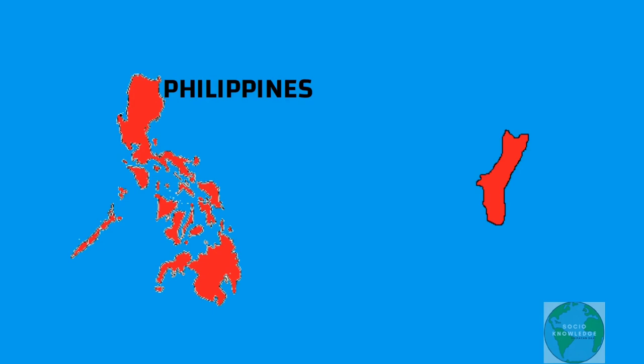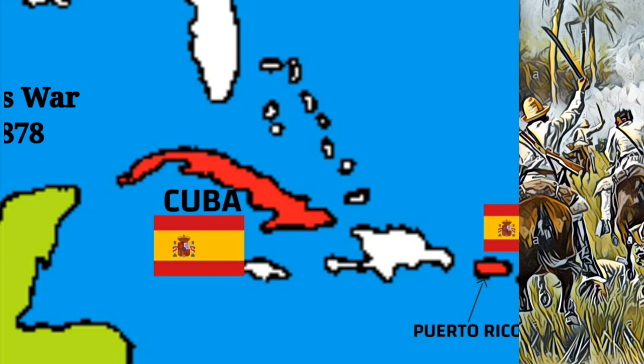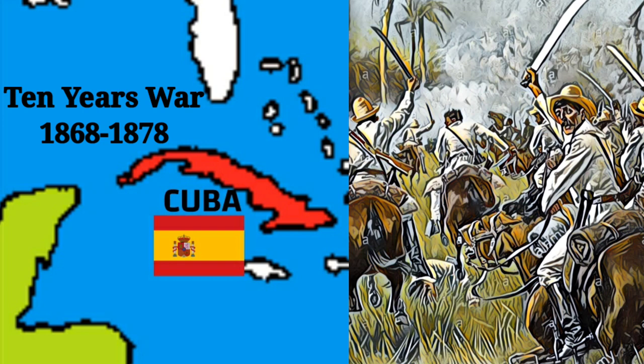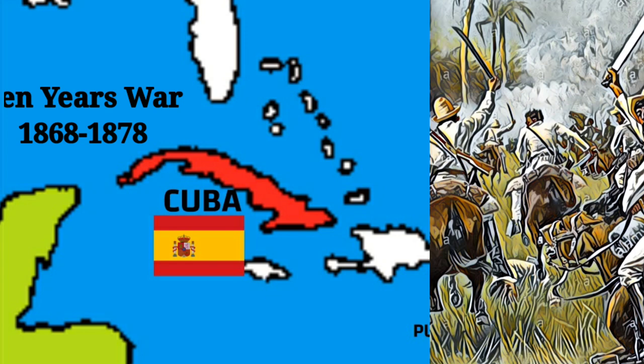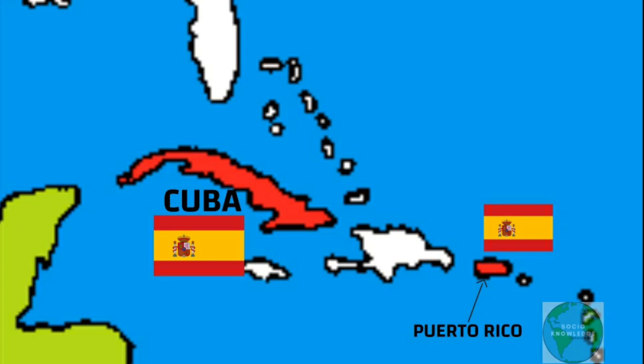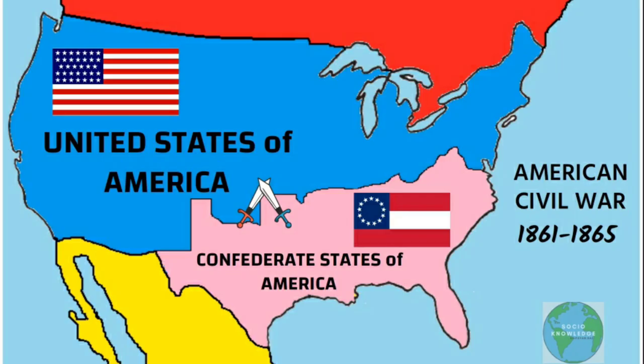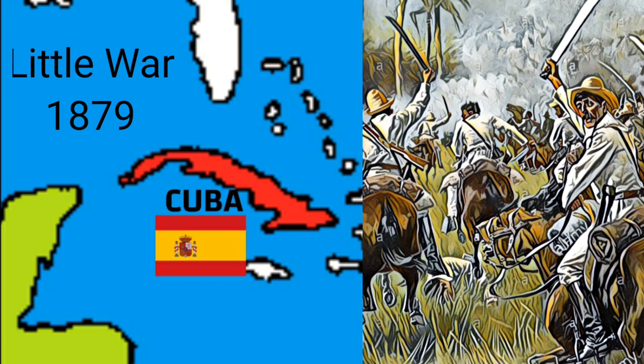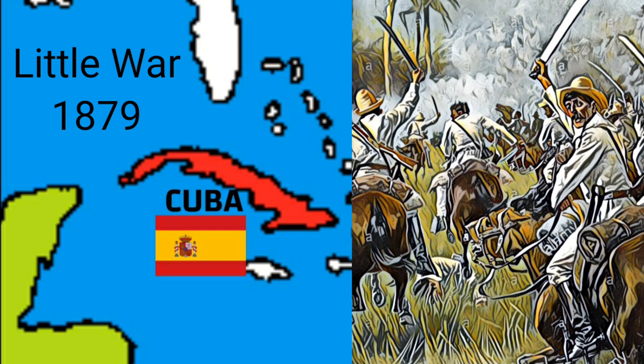Cuba also fought desperately for its independence. In 1868, it fought a war known as the Ten Years War since it lasted until 1878. It was a failure and was brutally suppressed by the Spanish forces. Though the United States supported the Cuban revolutionaries and wanted Cuba to gain independence, it couldn't send military aid since the US itself was recovering from its own civil war, which lasted between 1861 to 1865. The Cubans attempted once again in 1879, known as the Little War, but this revolution was also brutally suppressed by 1880.